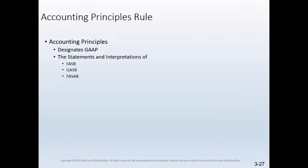The accounting principles rule recognizes the authority of certain designated bodies to issue generally accepted accounting principles. Under this rule, the AICPA has designated the FASB, GASB, FASAB, and IASB as such bodies. In addition, a CPA may report on financial statements prepared following the principles of other organizations, if the CPA's report or the financial statements make clear the financial reporting framework and do not suggest that generally accepted accounting principles were used.